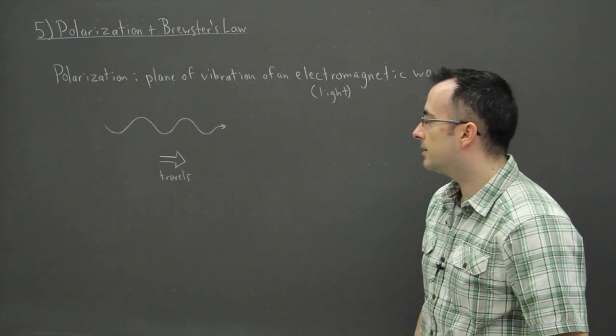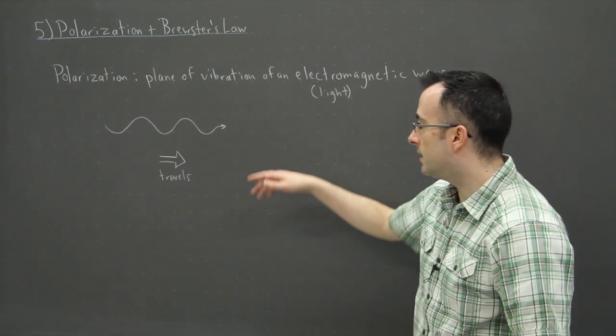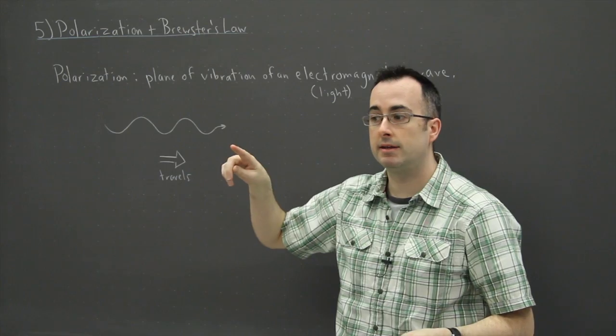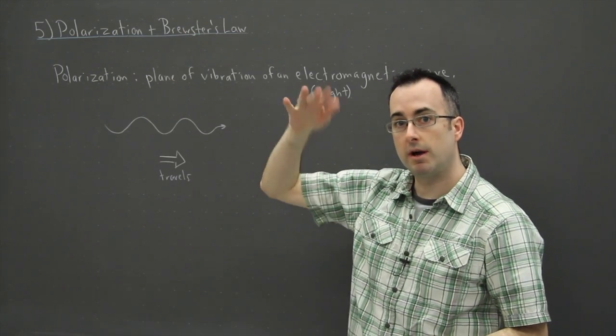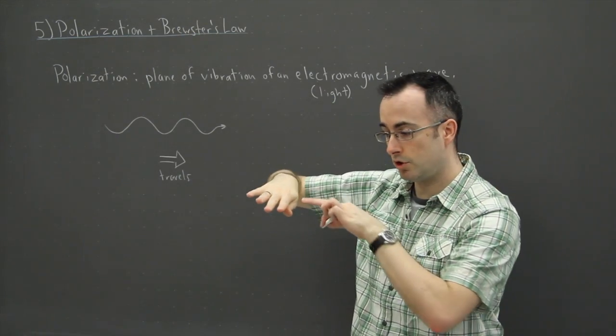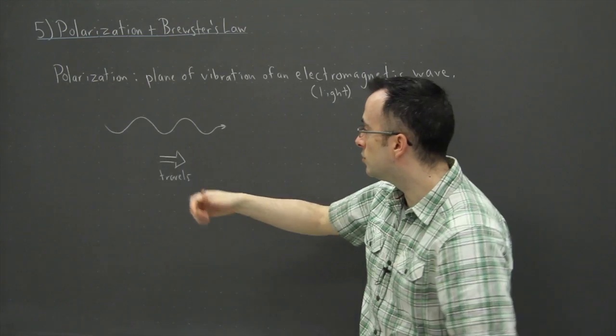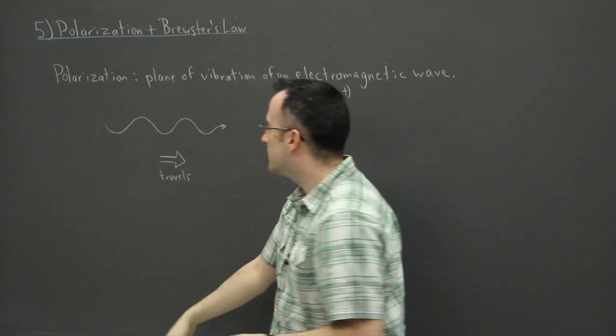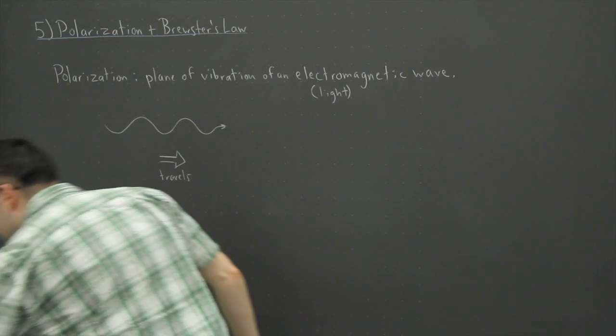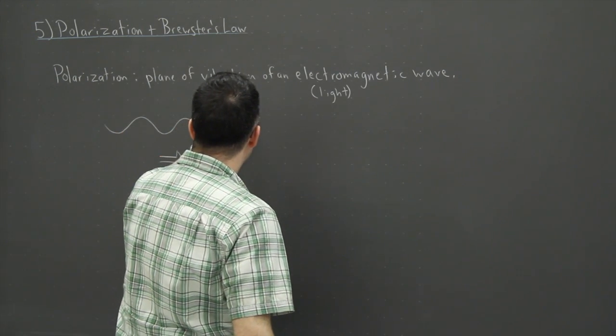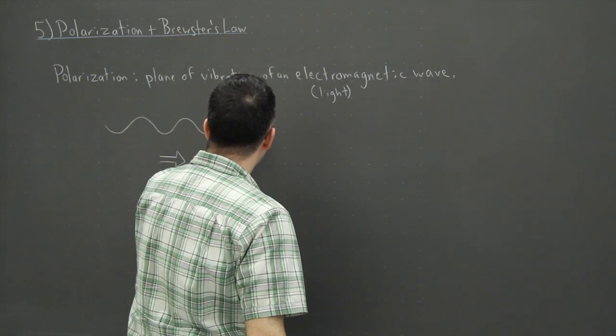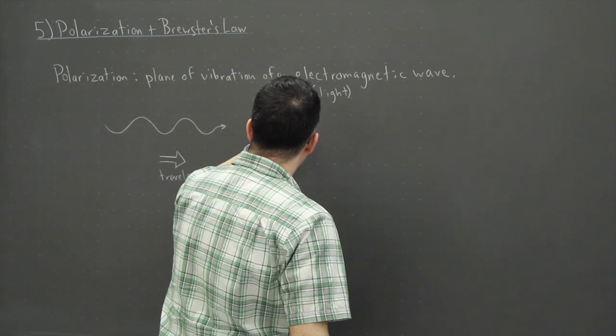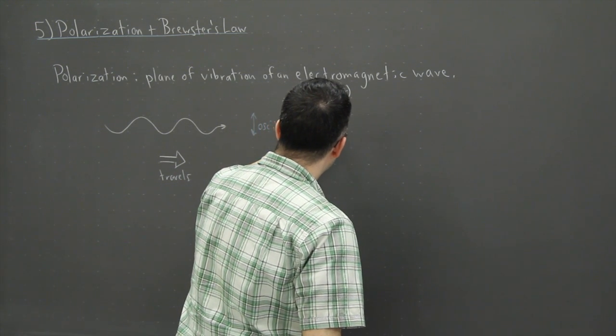Now this light though, it also oscillates. It goes up and down. It turns out in real life it's actually in 3D. It's got an electric field going up and down. It's got a magnetic field going perpendicular to that. So in this case, it's hard to draw in 3D on a two dimensional board. So let's assume this right here is the direction of oscillation right here. So it oscillates this way, let's say of the electric field.